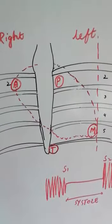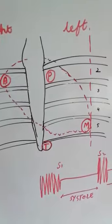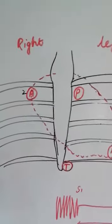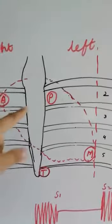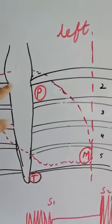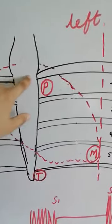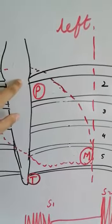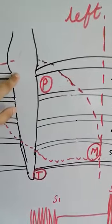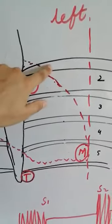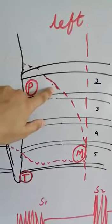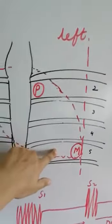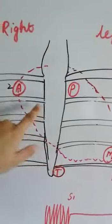On the precordium we have four areas: the aortic area, pulmonary area, mitral area, and tricuspid area. The aortic area lies in the right second intercostal space. To count intercostal spaces, find the slight elevation of the sternum known as the manubrium sterni — you can palpate it on your own sternum. Against the manubrium sterni, the second rib is located, and just below it is the second intercostal space, then the third rib and third space, fourth rib and fourth space, and so on.